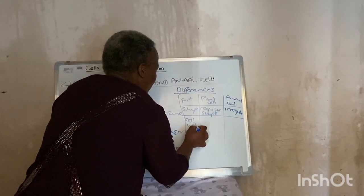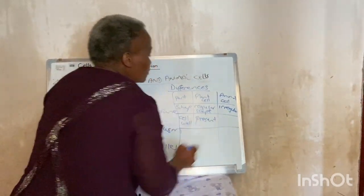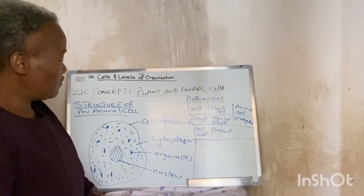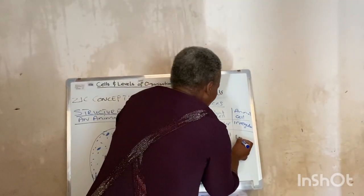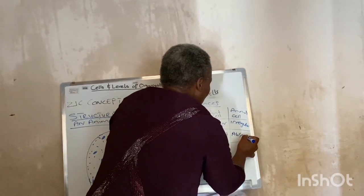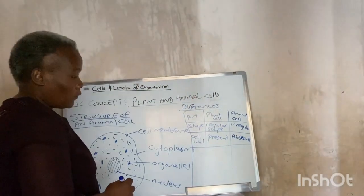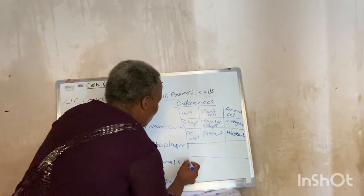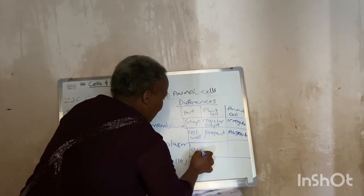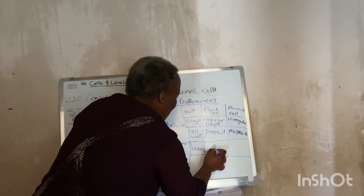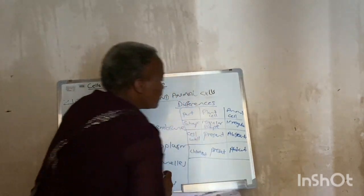Cell wall: plant cells have a cell wall made of cellulose, which gives the plant its rigid shape. But animal cells have no cell wall — it is absent. Chloroplast: who can make their own food? Plants — because they possess chloroplasts. So chloroplast is present in plants, but it is not present in animals.